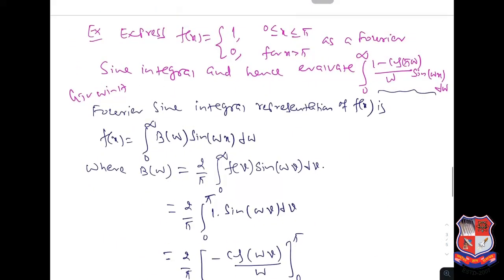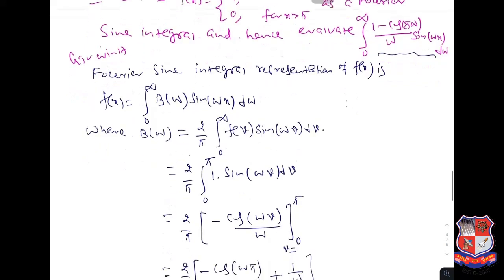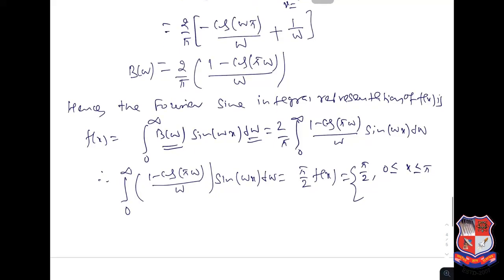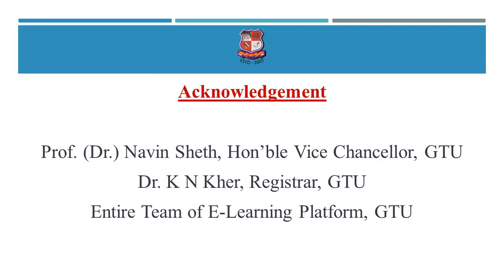f(x) is given as 1 for 0 to π (closed interval), and 0 for x > π. So the answer is π/2 when 0 ≤ x ≤ π, and 0 when x > π. Thank you.